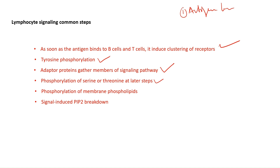The signaling pathway proceeds by one molecule activating the other. In the later stage, activation is due to phosphorylation of serine and threonine. The receptor itself gets phosphorylated at tyrosine and that's how it becomes activated. Later signaling molecules are activated by phosphorylation at serine or threonine. Next is phosphorylation of membrane phospholipid — PIP2 due to phosphorylation gets converted into PIP3.